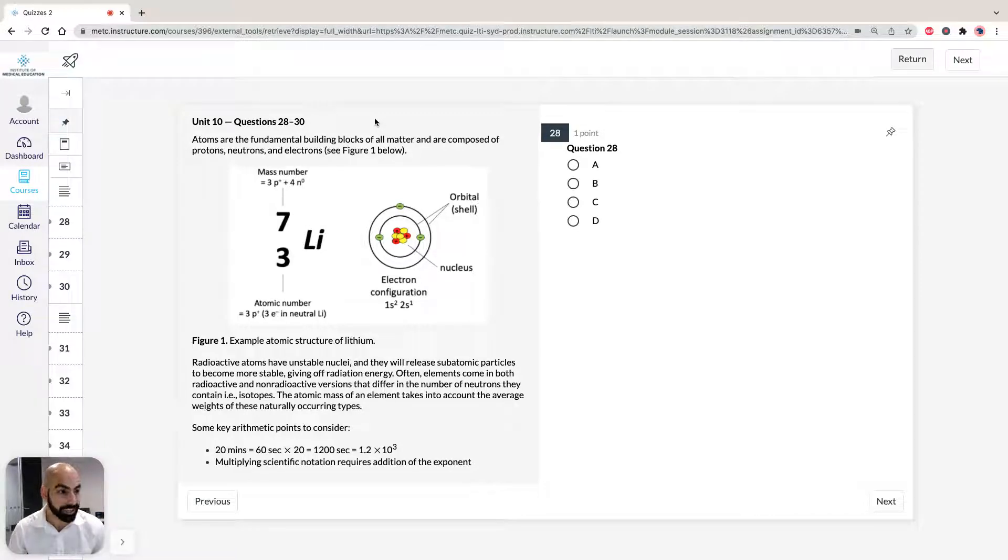Fluorine 18 is commonly used as the positron emitter. The isotope is produced in a cyclotron by bombarding oxygen 18 with protons. It's a very short stimulus, but you don't have to really read it because the questions are straightforward here.